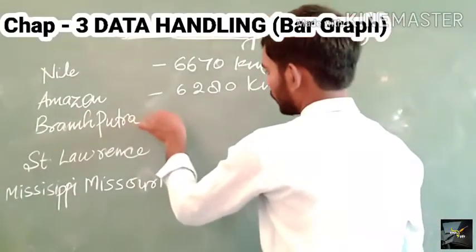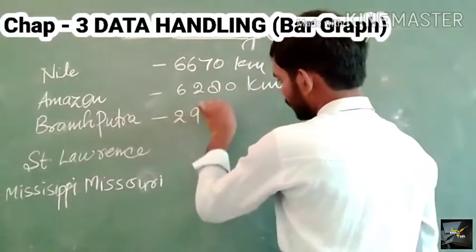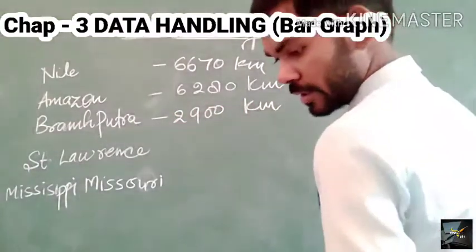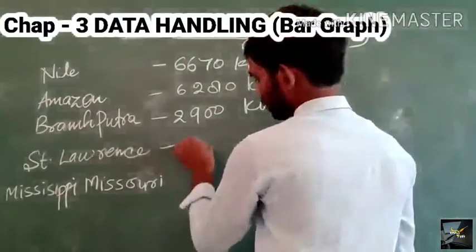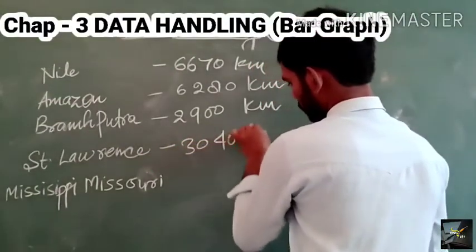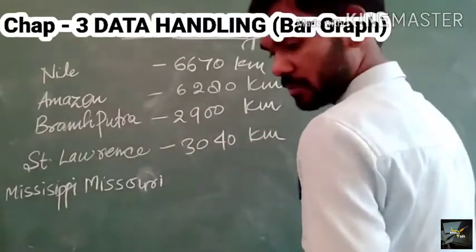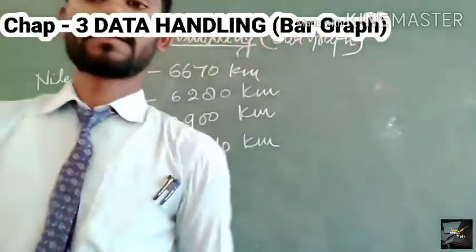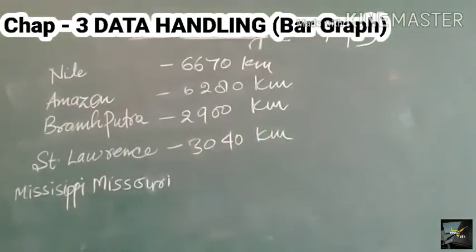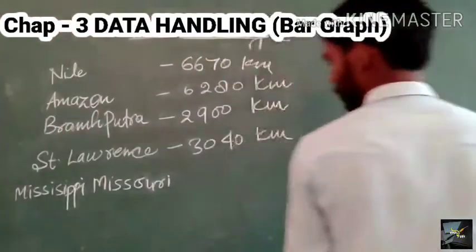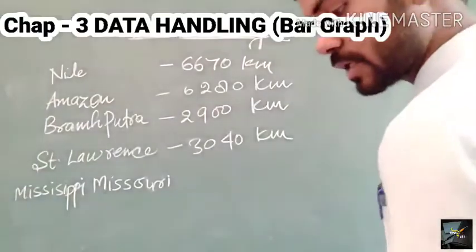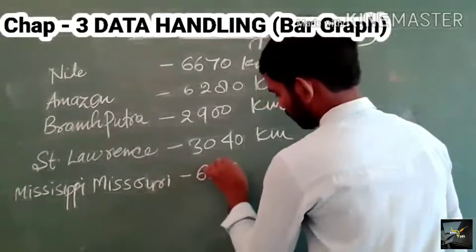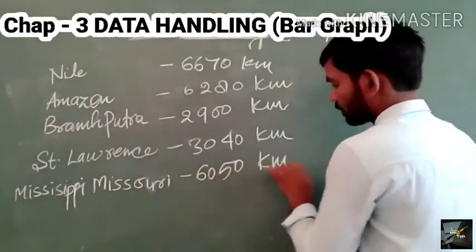The Brahmaputra river has a length of 2900 kilometers. St. Lawrence is 3040 kilometers. And the last river, Mississippi Missouri, has a length of approximately 6050 kilometers.